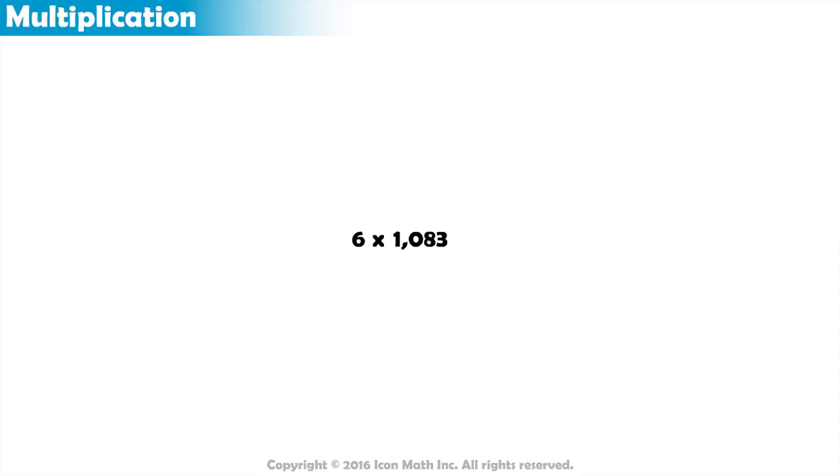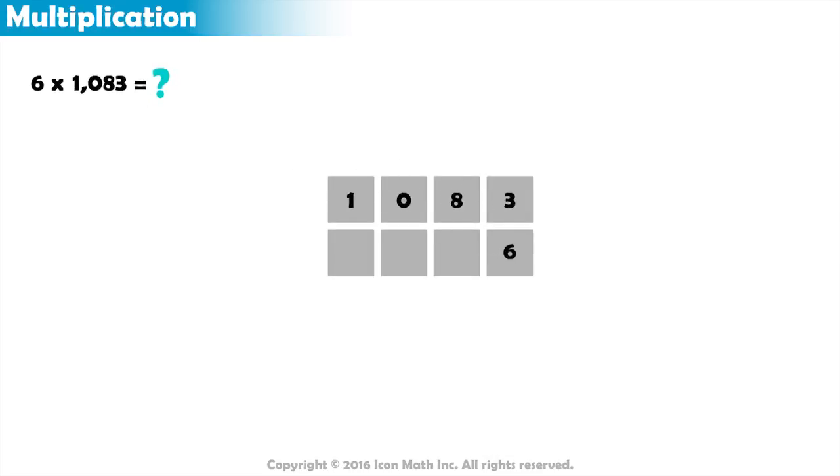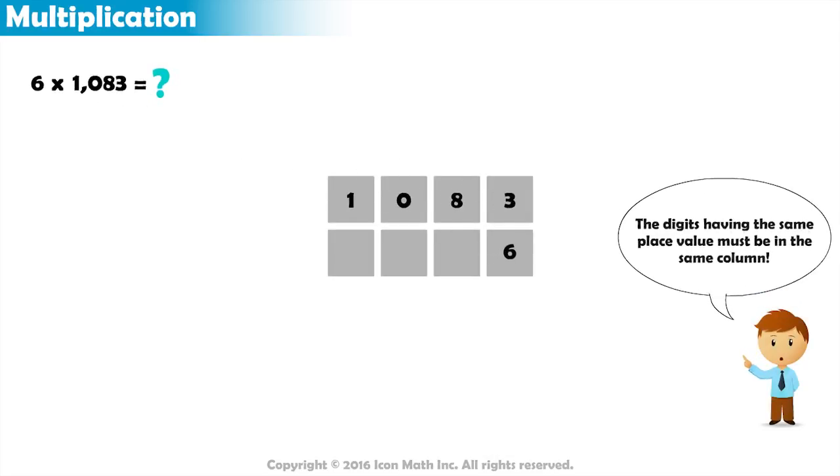Suppose we want to find the product of 6 and 1,083. We can use this standard procedure of multiplication, and we start by arranging the digits into columns. The digits having the same place value must appear in the same column.